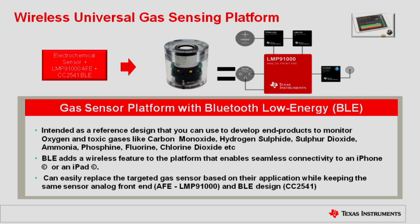We are talking about a gas sensor platform that hooks up with BLE. This is intended as a reference design that you can use to develop end products to monitor oxygen and toxic gases like carbon monoxide, hydrogen sulfide, sulfur dioxide, phosphine, fluorine — there are a lot of different toxic gases out there. The BLE adds a wireless feature that enables seamless connectivity to an iPhone or an iPad. We can easily replace the targeted gas sensor based on the application while keeping the same sensor analog front-end, the LMP-91000, and the BLE design CC2541.